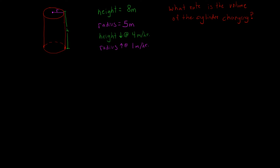The first thing we're going to have to do is write out the formula for the volume of a cylinder. That's going to be: volume equals pi times the radius squared times the height.